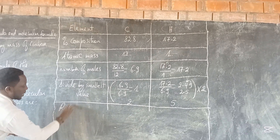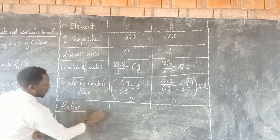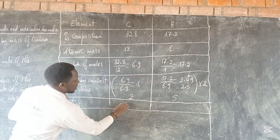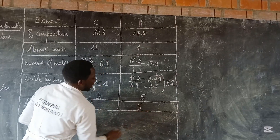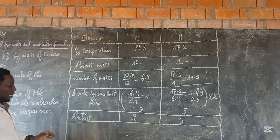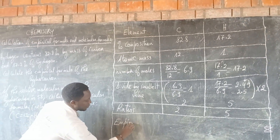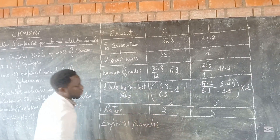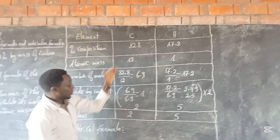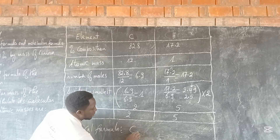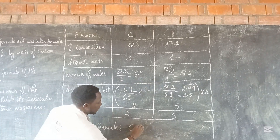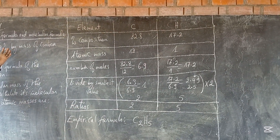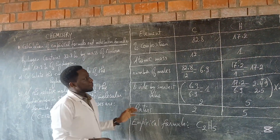The last row contains the ratios — the final answers we get. Our ratio for carbon is 2, and the ratio for hydrogen is 5. This is the empirical formula of the hydrocarbon: we write each atom with its ratio. Carbon has 2 and hydrogen has 5, giving us the empirical formula C₂H₅. This is how we calculate the empirical formula from percentages.